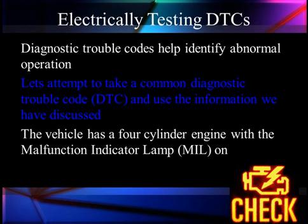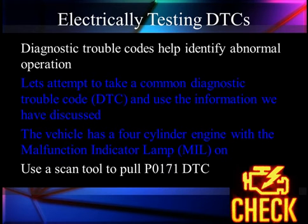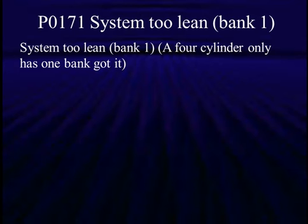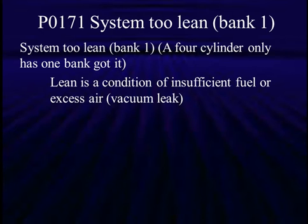The vehicle we're working with is a four-cylinder engine with a malfunction indicator lamp on. We're going to use a scan tool to pull a trouble code, and it's P0171. P0171 says the system is too lean for bank one. Since it's a four-cylinder, we only have one bank, so we've got it pretty straightforward. Lean is a condition of insufficient fuel or excess air.